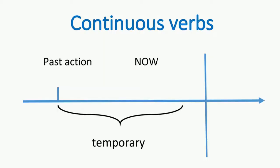Now, let's move to continuous verbs used for past actions happening until now. They are temporary and will not happen in the future. For example: I am doing homework now. I am eating lunch now. From the past until now, you are eating, but after that you will not have to eat anymore. So, these are the continuous verbs.